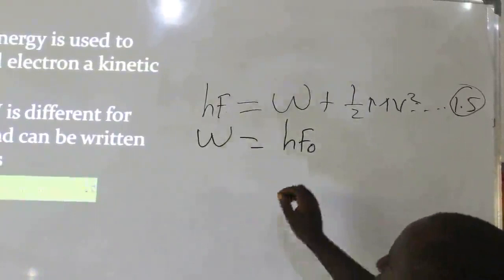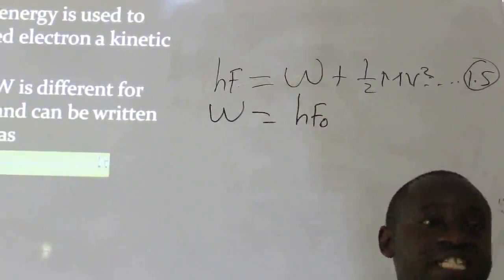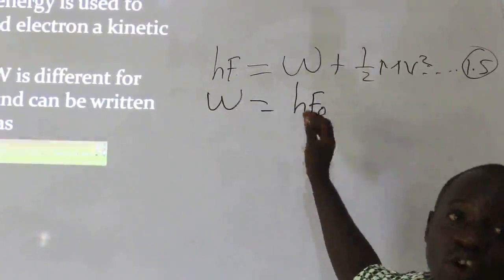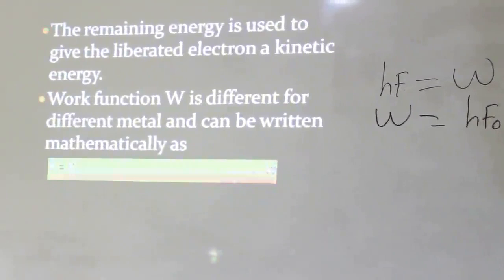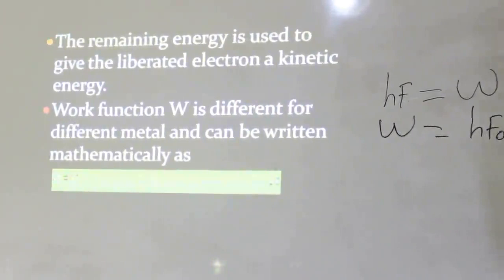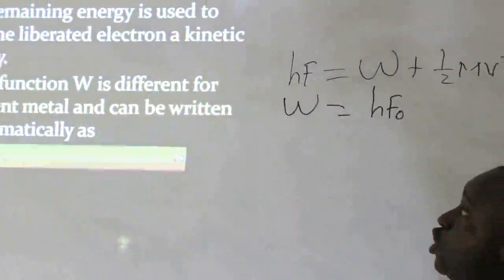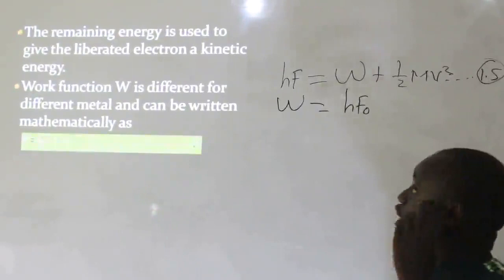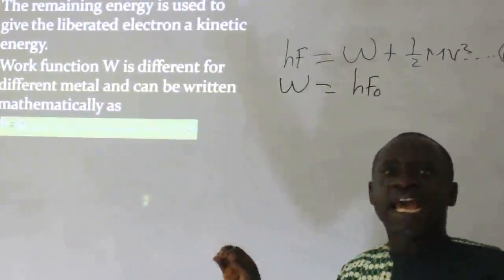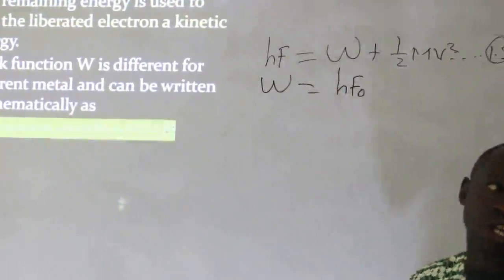The work function refers to the amount of energy required for electrons to be liberated from the surface of a metal. This amount of energy is not the same for every element — for example, the amount of energy required to emit electrons from the surface of copper is not the same as that required from iron. So the work function differs from element to element.